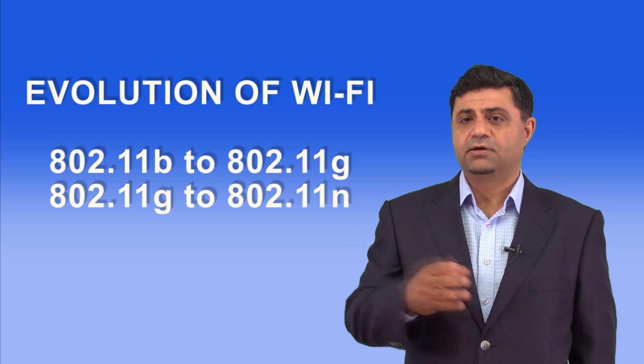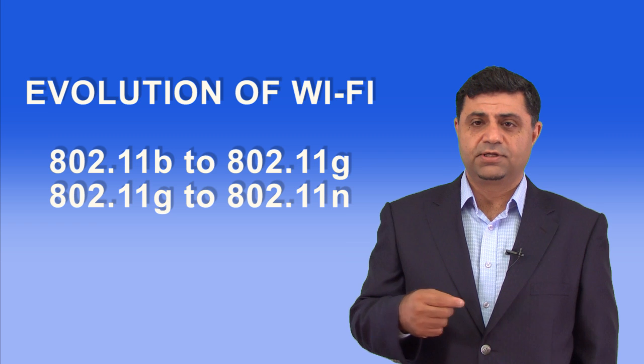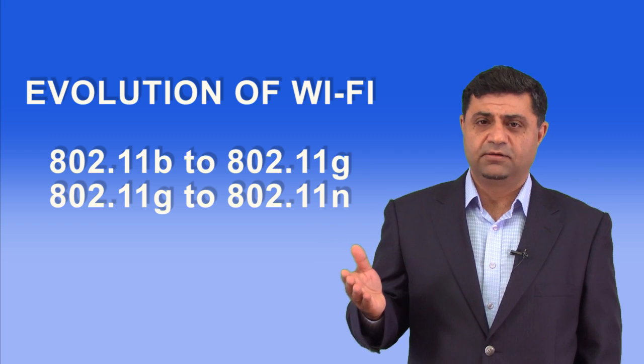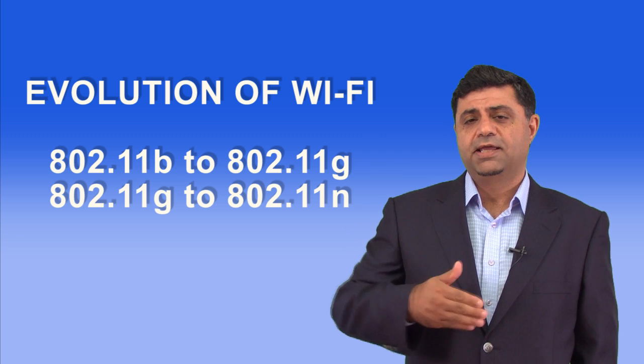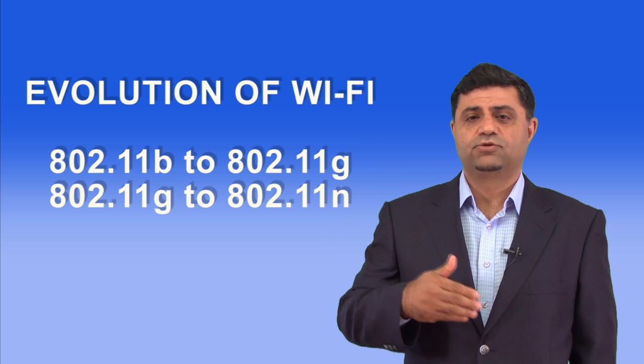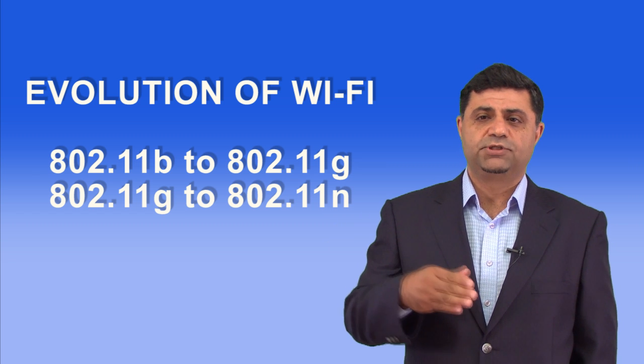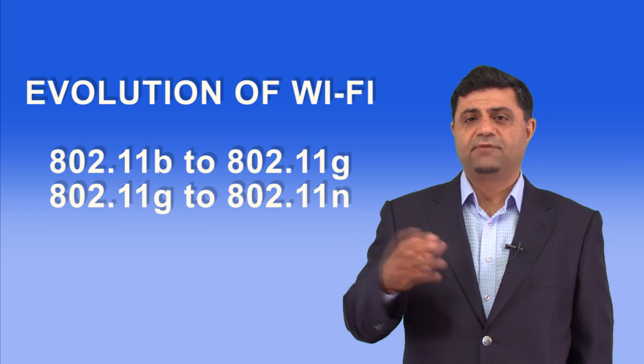When 802.11B came along, and when G came along, the transition happened in 3 to 4 years—the majority of systems went from B to G. When N came along, the majority switched in a 3 to 4 year timeframe from N to G.